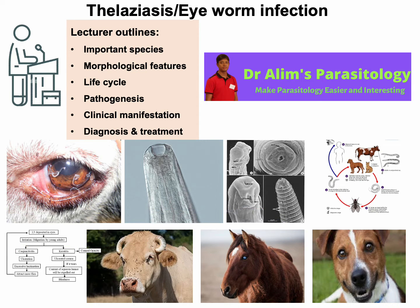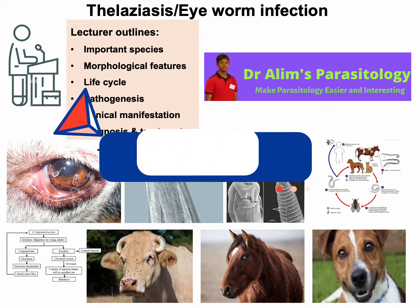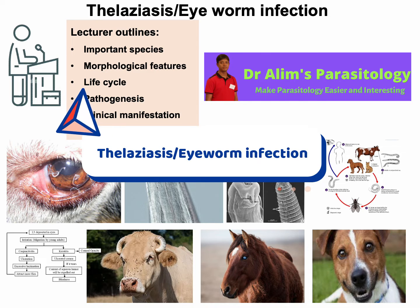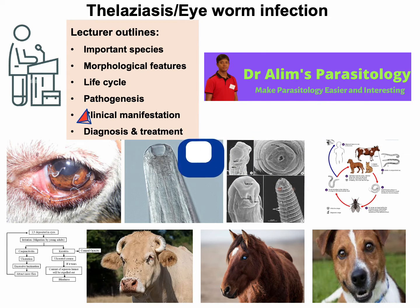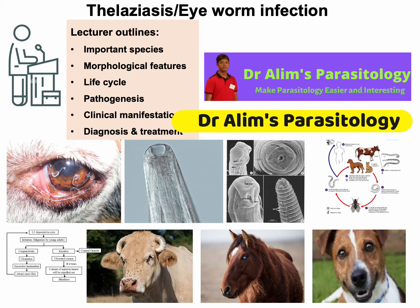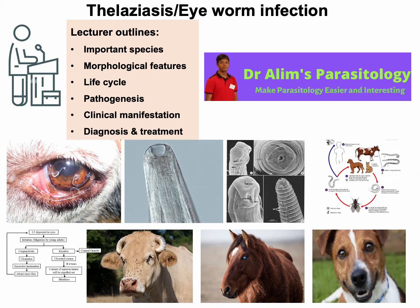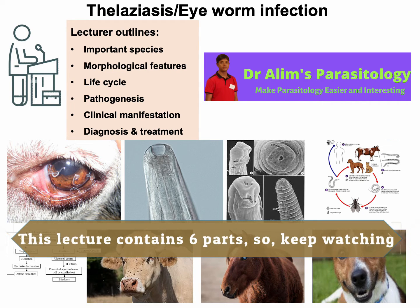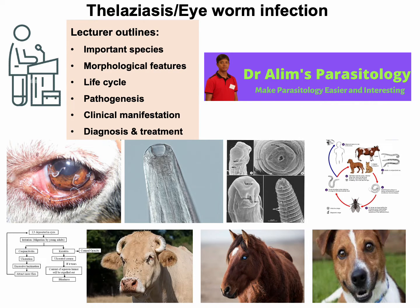Hello everyone, welcome back with another interesting video lecture on telagiosis, or eyeworm infection, in different animals such as cattle, buffalo, horse, dog, and cat. In this lecture, I'm going to discuss the important species of eyeworms of different animals, their morphological features and life cycle, and later on the pathogenesis, clinical signs, diagnosis, and treatment of telagiosis.